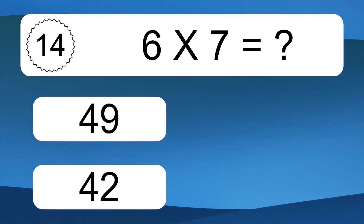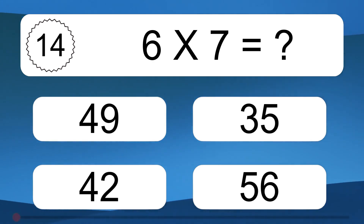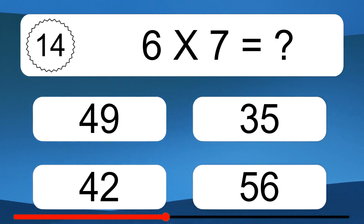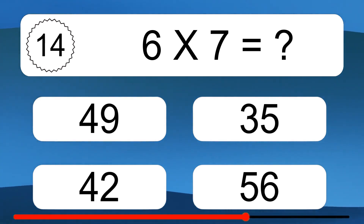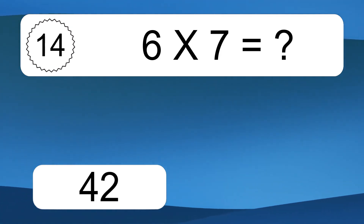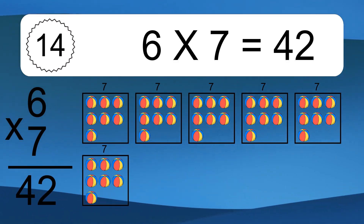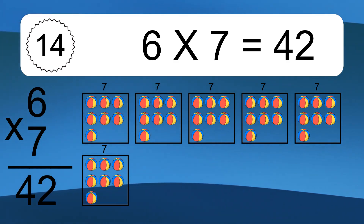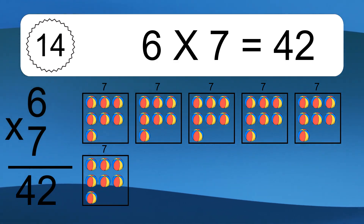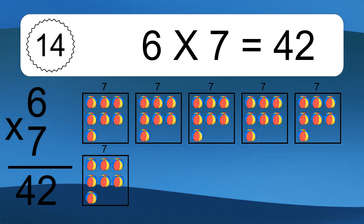6 times 7 equals what? 6 times 7 equals 42. We have 6 boxes, and each box has 7 colorful balls inside. If you count all the balls in all the boxes together, you will have 6 times 7 balls. This equals 42 balls.